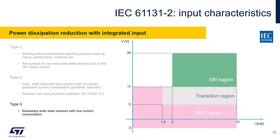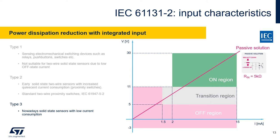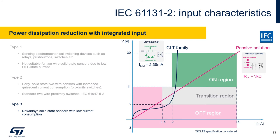I would like to show you on a practical example how much we can improve the efficiency and reduce power dissipation with our integrated input. Let's consider the most common type 3 input characteristic and the corresponding regions definition. We can draw in the chart the linear characteristic of a passive solution with impedance in range of 5 kOhm. Adding the input volt-ampere characteristic of one of our integrated inputs, the input current is very effectively limited, especially at high input voltages. When we compare the power dissipation at the nominal voltage operating point, we can see an excessive reduction in range of 50% in comparison with the simple discrete solution — a very interesting result.